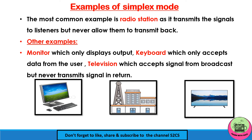Examples of simplex mode: the most common example is a radio station, as it transmits signals to listeners but never allows them to transmit back — only the radio station transmits signals to listeners. Similarly, other examples are a monitor which only displays output and does not take any input, a keyboard which you use just to input data, and a television which accepts signals from broadcast but never transmits signals in return.